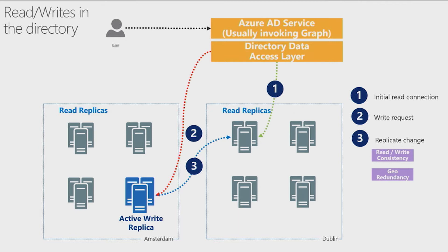It also achieves geo-redundancy: the write made it to Amsterdam and also to Dublin. So if something were to happen to the Amsterdam data center and it's lost, the change is not lost because the replica in Dublin has it and can propagate it further within the system. Once replication has succeeded and we know the write made it to two different copies, we return to the user with a successful write response confirming the write made it to the core store.